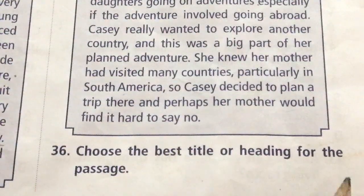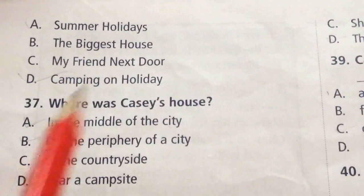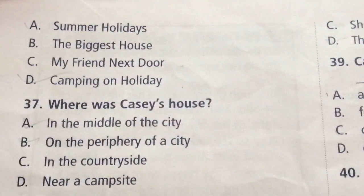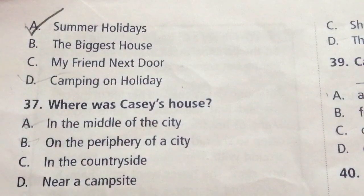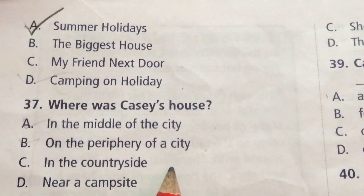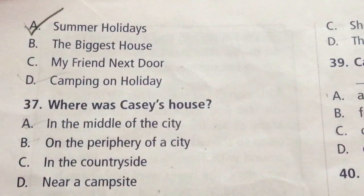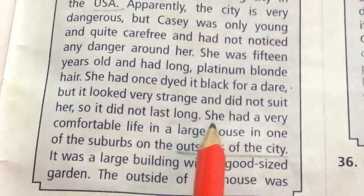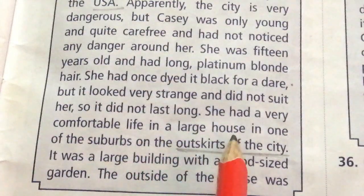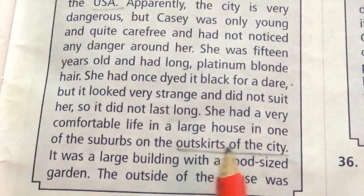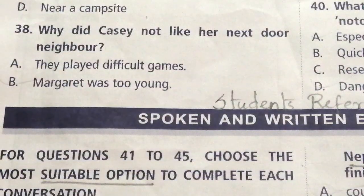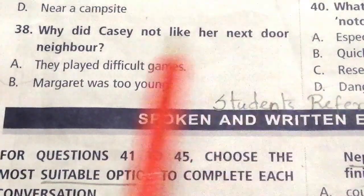Question 36: Choose the best title or heading for the passage. Options: Summer holidays, The biggest house, My friend next door, Camping on holiday. The answer is A: Summer holidays. Question 37: Where was Casey's house? Options: In the middle of the city, on the periphery of a city, in the countryside, near a campsite. The answer is B: On the periphery of the city. The answer is given here: she had a very comfortable life in a large house in one of the suburbs on the outskirts of the city. Outskirts means outer parts of a town or city.